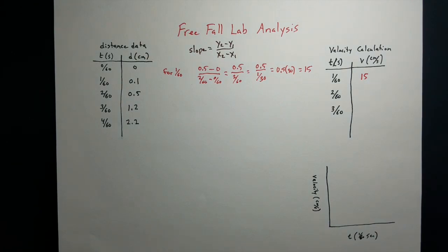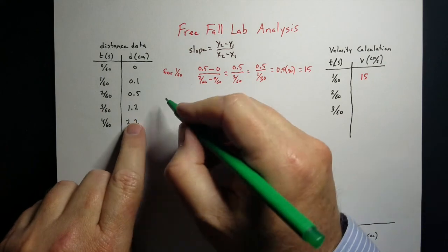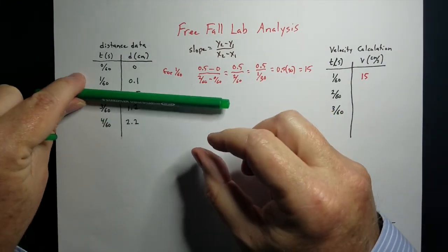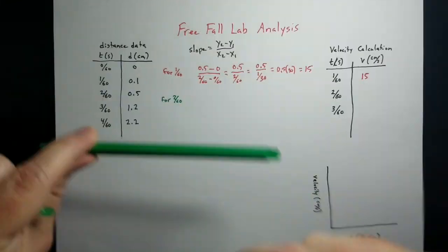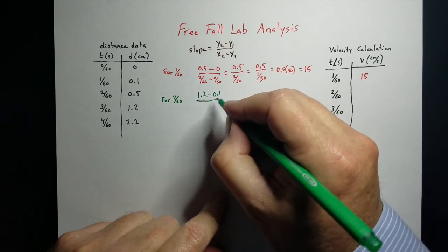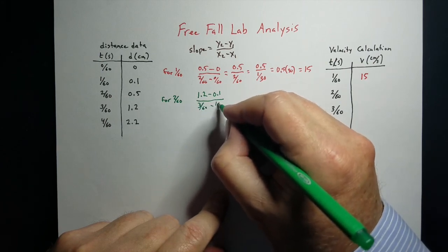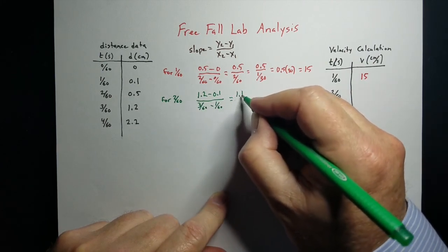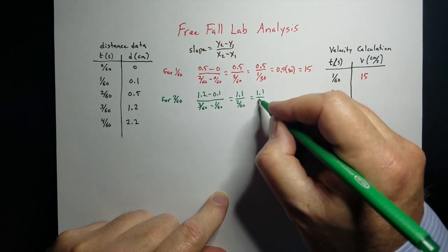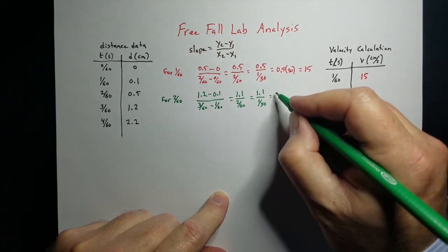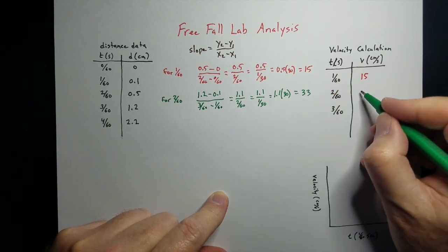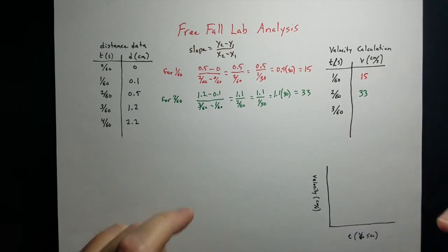Let's do it for 2/60ths. Cover up that point and take the point after minus the point before: 1.2 minus 0.1, over 3/60ths minus 1/60th. That gives 1.1 over 2/60ths, which again reduces to 1/30. So we get 1.1 times 30, which equals 33. The velocity at 2/60ths is 33 centimeters per second.